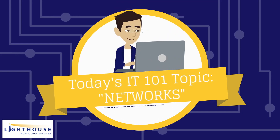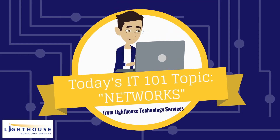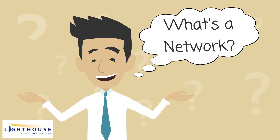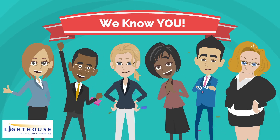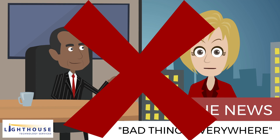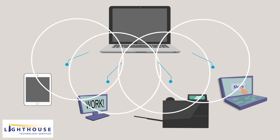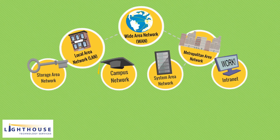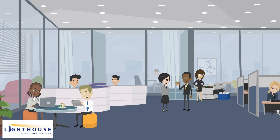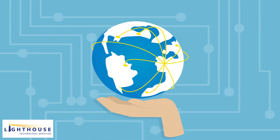Today's IT 101 topic: Networks. What's a network? We're talking about IT here, so not a group of people that you know, or a television station you watch. A network is a group of two or more computer systems linked together. There are many types of computer networks, but the two most commonly used are local area networks, LANs — think small area like an office building — and wide area networks, WANs — think large area like the internet.